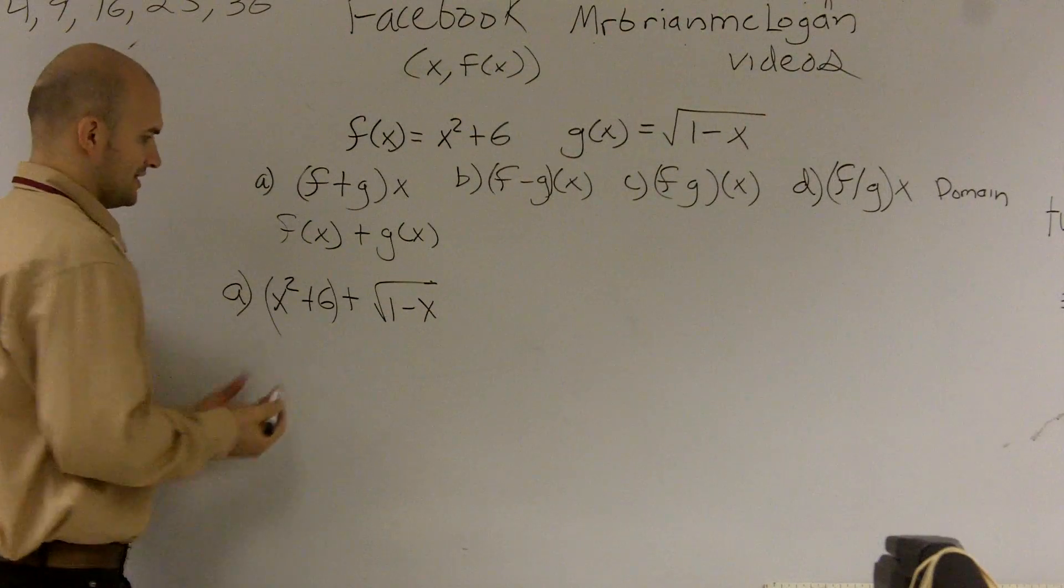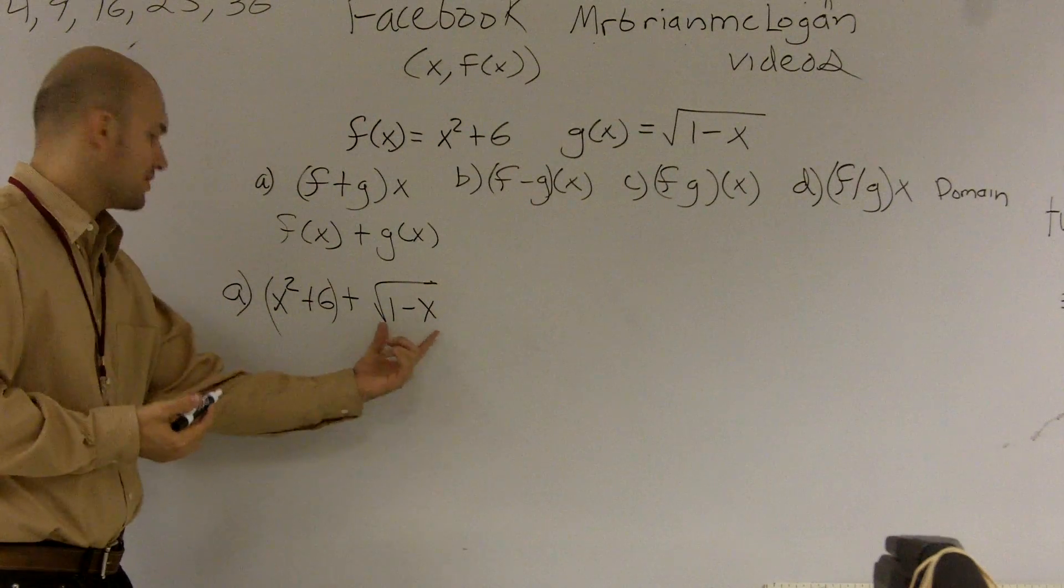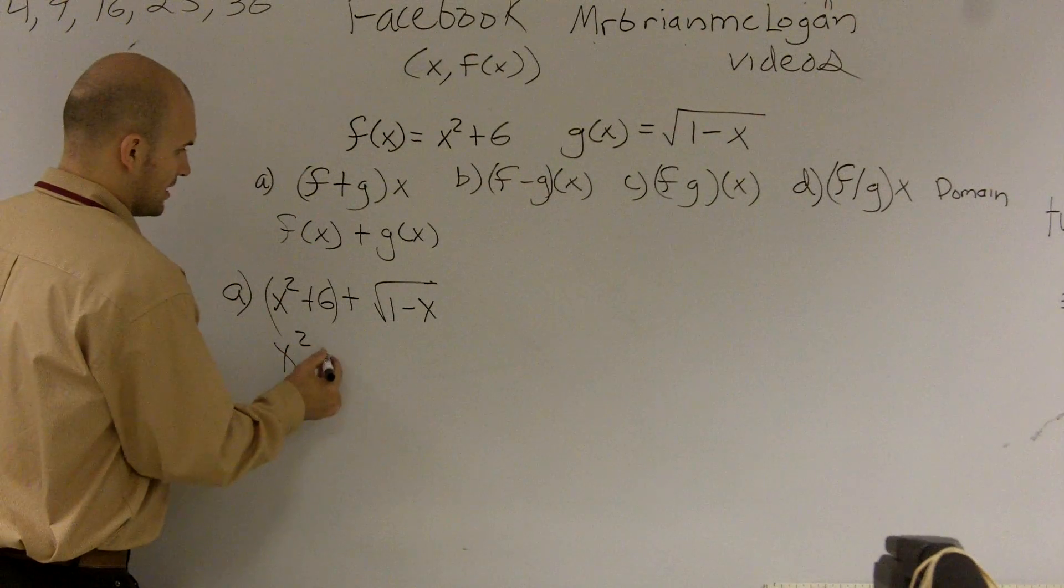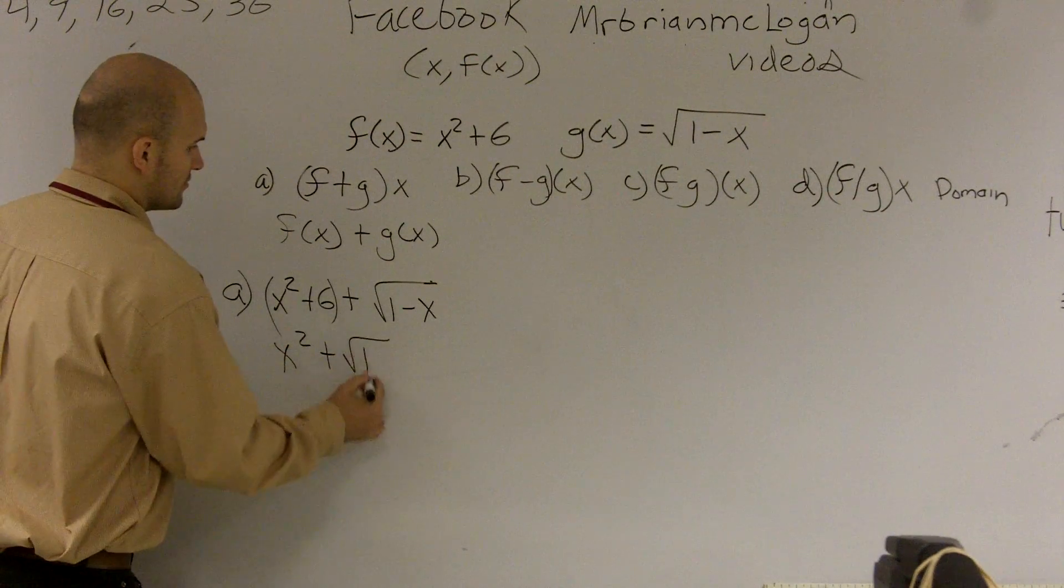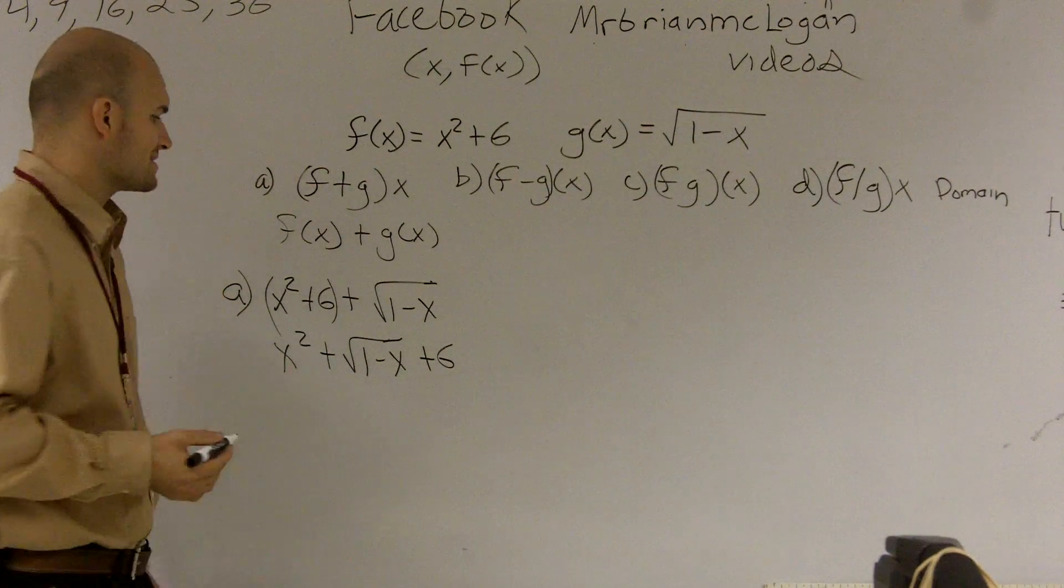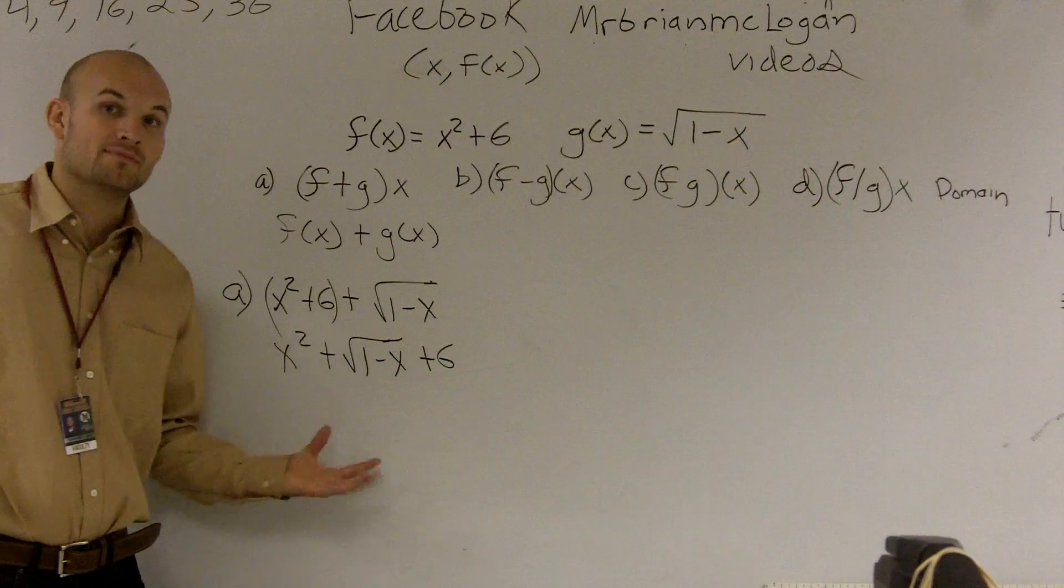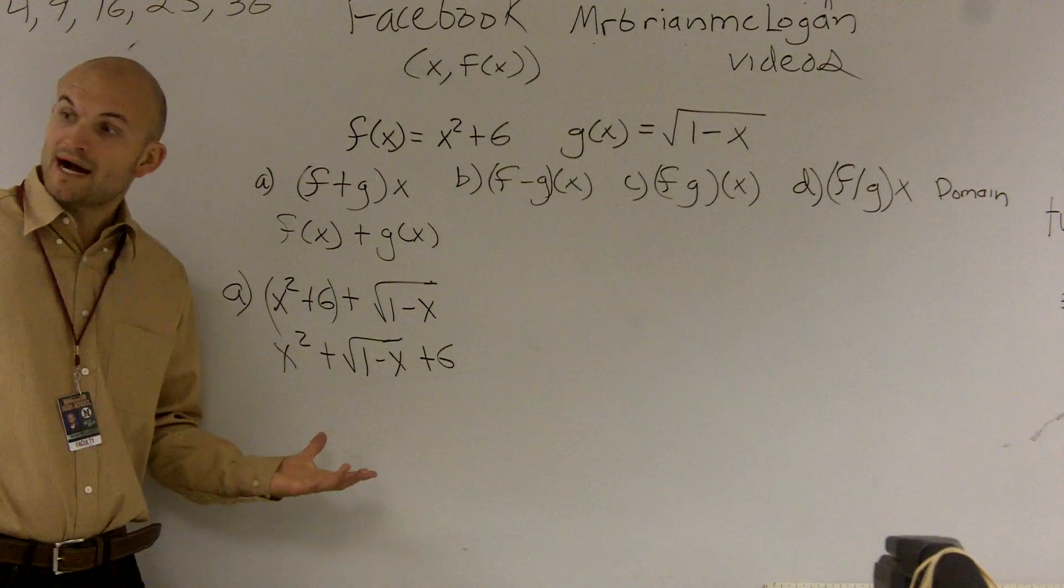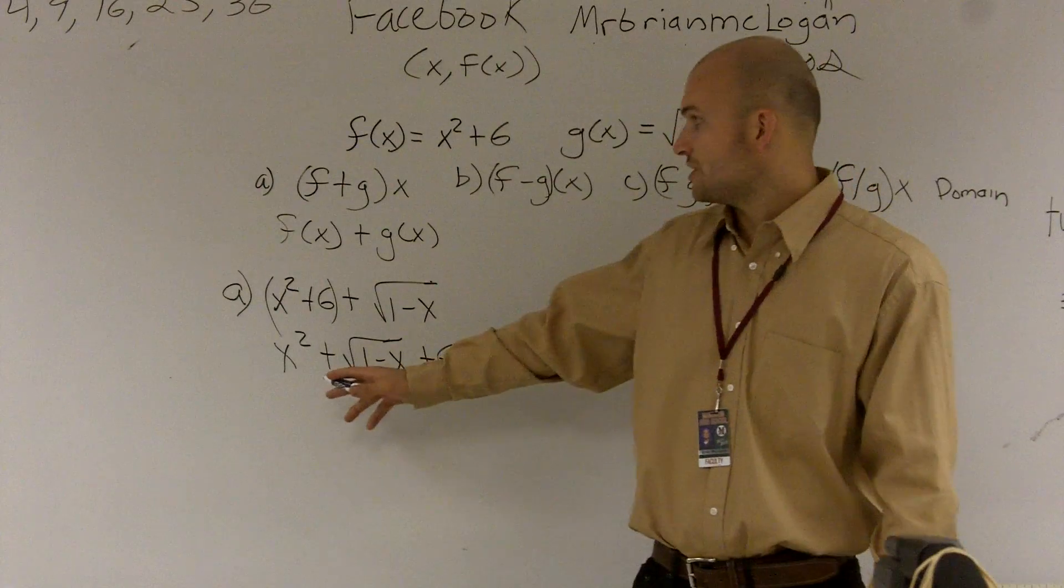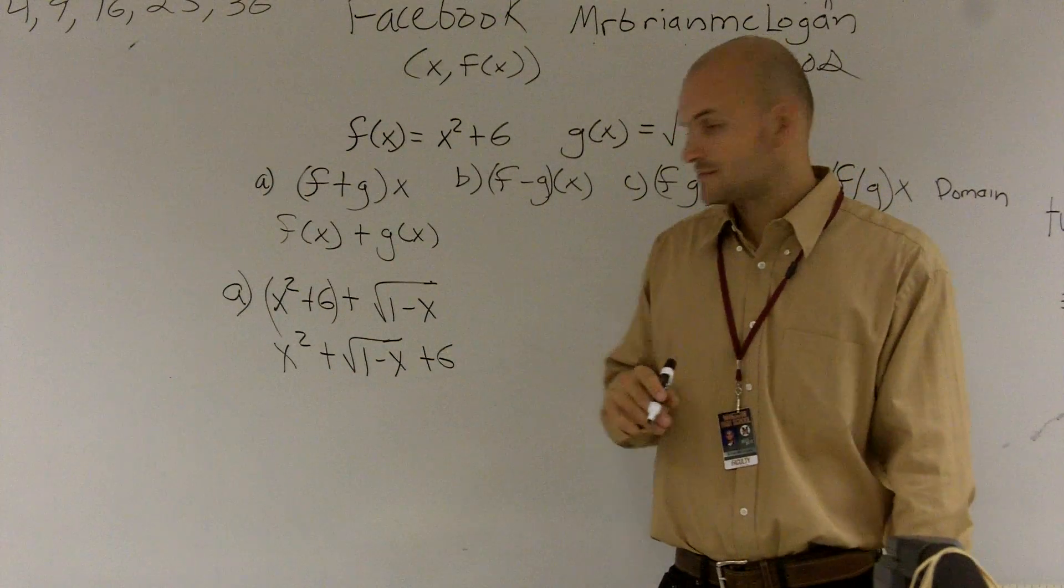And I look at this, there's really nothing I can combine with the square root and x squared. So really it's just x squared plus square root 1 minus x plus 6. Usually just like write a constant at the end, but I can't combine them. If there was like terms, you would combine the like terms. There's no like terms for this problem, so therefore it stays like that.